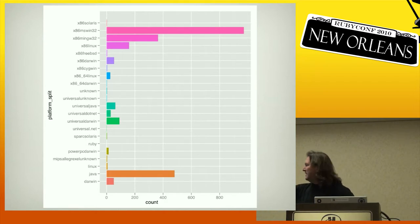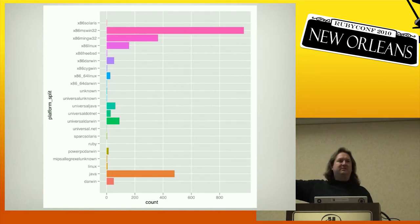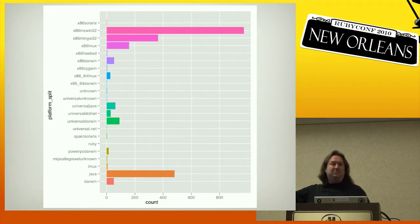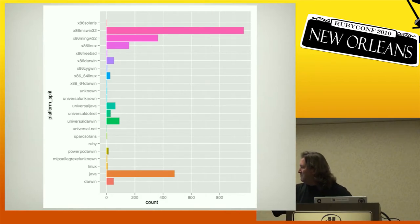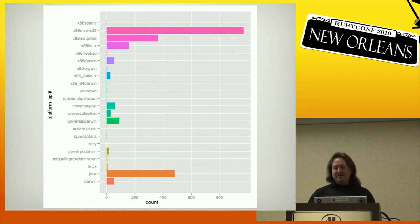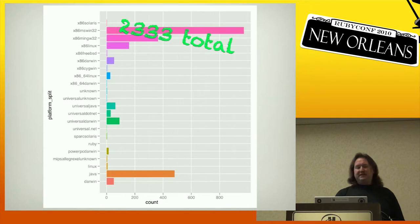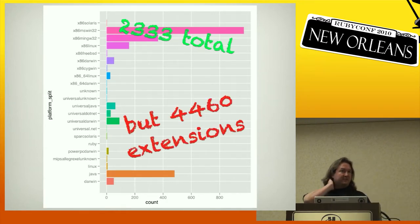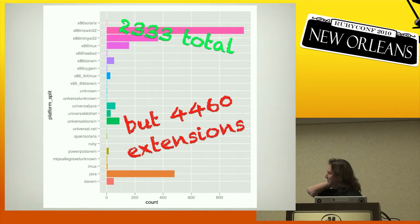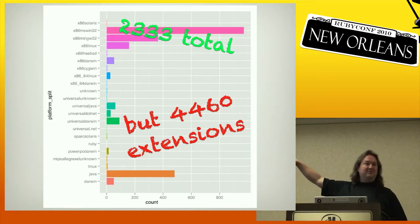There are some really small platform categories — PowerPC Darwin, SPARC Solaris, Universal .NET, MIPS, Allegro, Excel, Unknown. But here's the thing: we've got 2,333 total gems that have a native platform, and we've got 4,468 gems that have extensions. Take note of this — we need to make sure these numbers start to get closer and closer together.